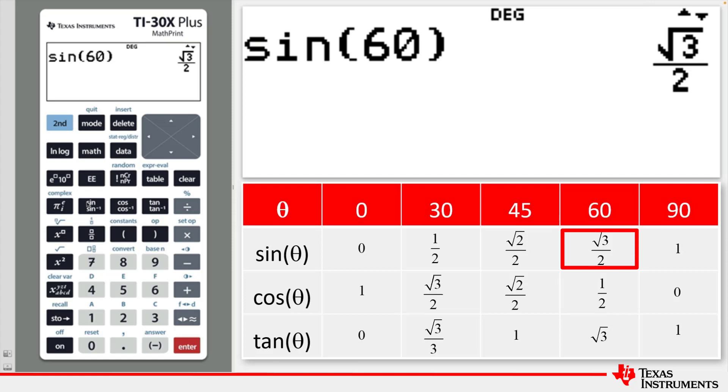Note that the answer is given as a fraction, with a square root of 3 on the numerator. To work out the approximate value, choose the answer toggle key.